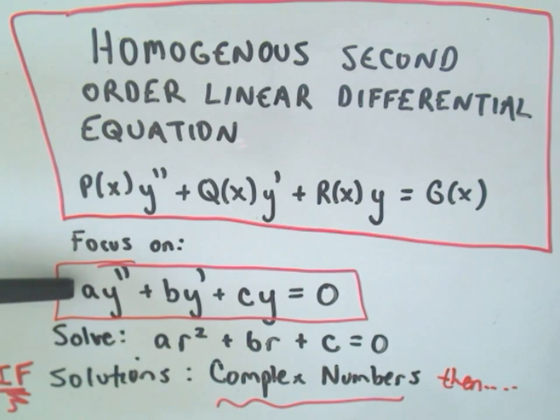We're going to look at an easier case where P, Q, and R are constants replaced by values A, B, and C. We want A to be non-zero. The idea is we're going to turn the differential equation into basically a quadratic equation. We call this the characteristic equation.